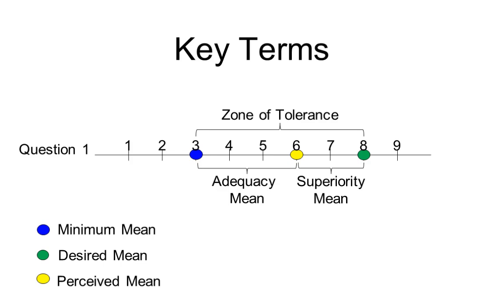These concepts make more sense when seen in action. In this example, the mean of respondents' minimum scores is three and the mean of their desired scores is eight, so the zone of tolerance is the five-point range between those two scores. The perceived mean of six falls within the zone of tolerance, indicating the library is exceeding users' minimum expectations. The adequacy mean is three, and the superiority mean — the measure of the library's room for improvement — is negative two.